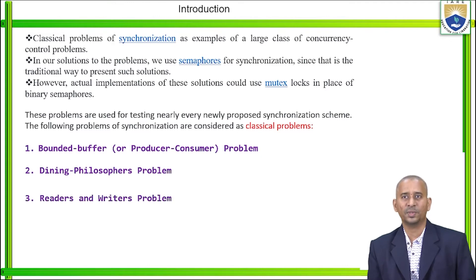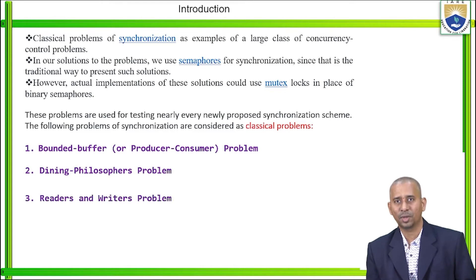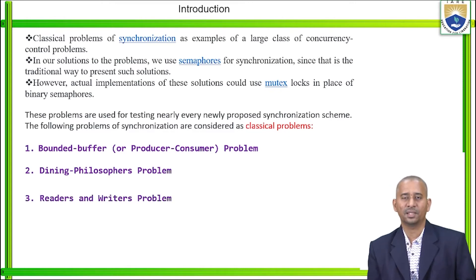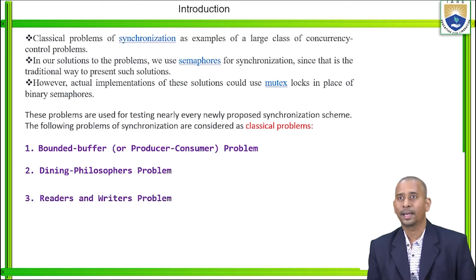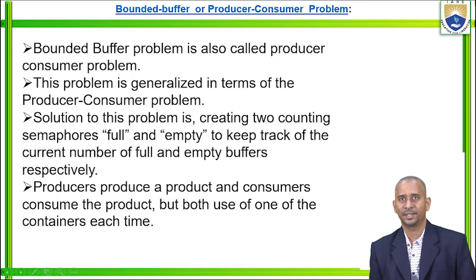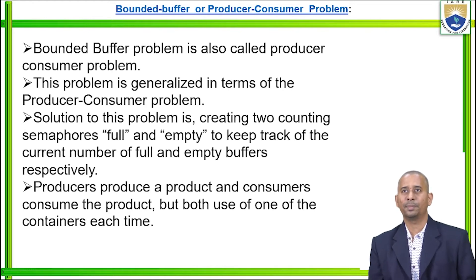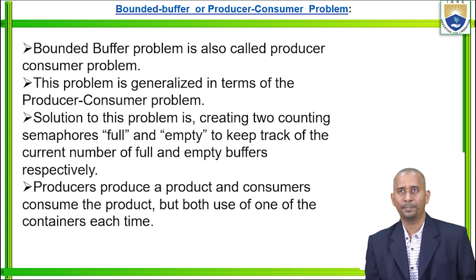The various classical problems of synchronization include the producer-consumer problem, sometimes called the bounded buffer problem, the dining philosophers problem, and the readers-writers problem. These are considered classical problems of synchronization. The bounded buffer problem is also called the producer-consumer problem.